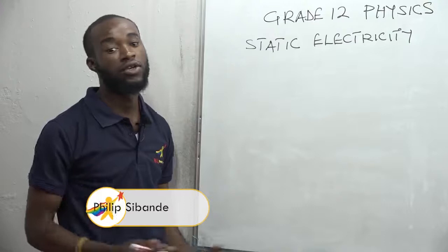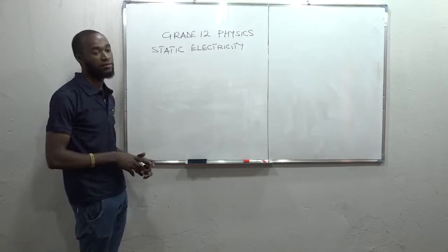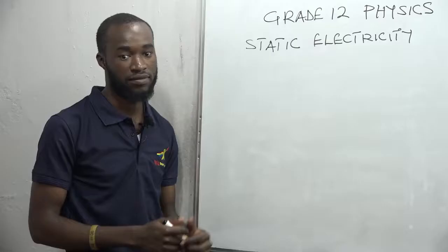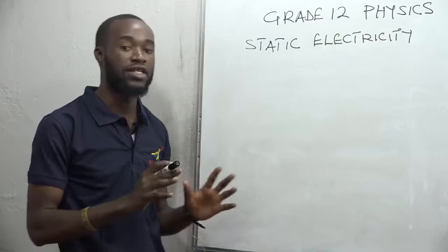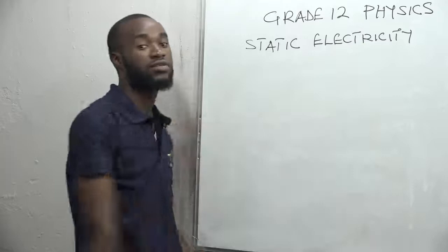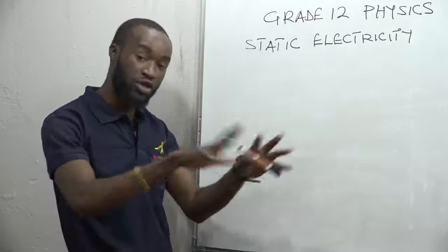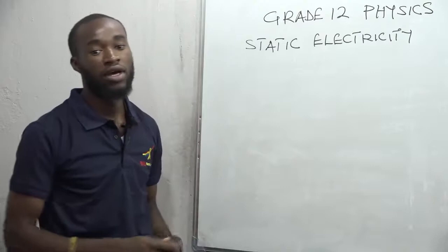Here we are with static electricity. We know that electricity is the movement of charges inside a conductor. But we have other materials called insulators. These insulators also build charges on the surface, but these charges do not move — they are static. That is the meaning of static electricity: to be static simply means not to move, to be immobile. So we will be looking at electricity that is immobile and builds on the surface of a material.